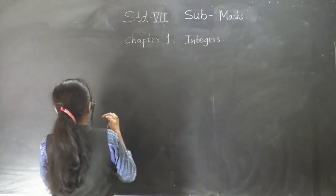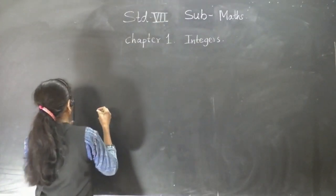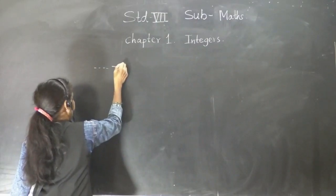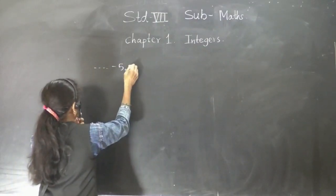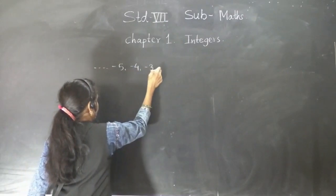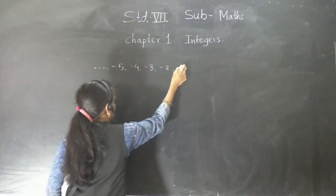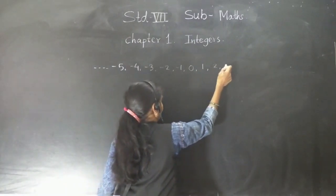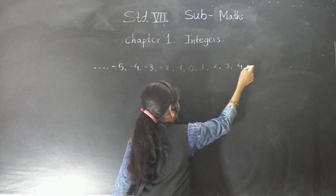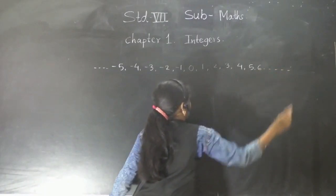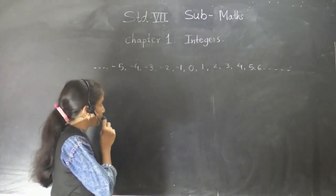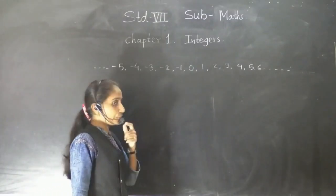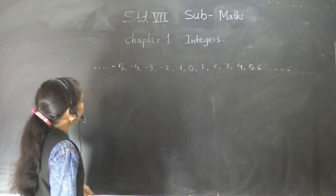Now suppose I will take some numbers. Minus 5, minus 4, minus 3, minus 2, minus 1, 0, 1, 2, 3, 4, 5, 6. These are all the numbers called integers — negative numbers with whole numbers. These are called integers.